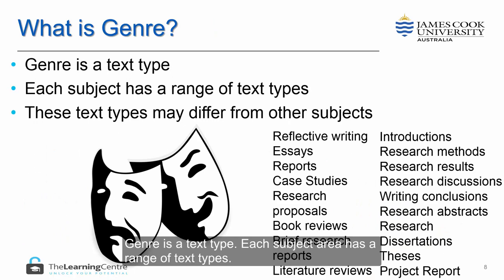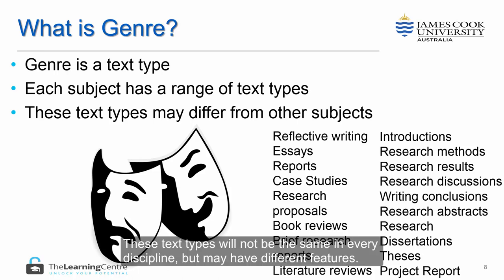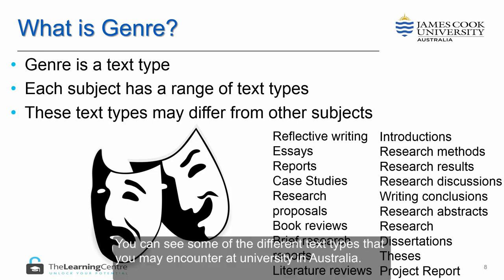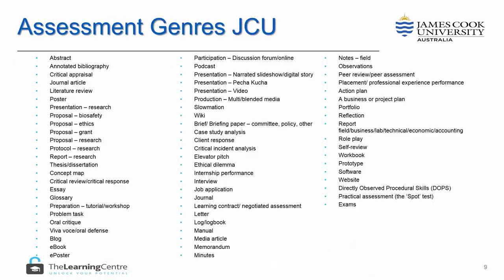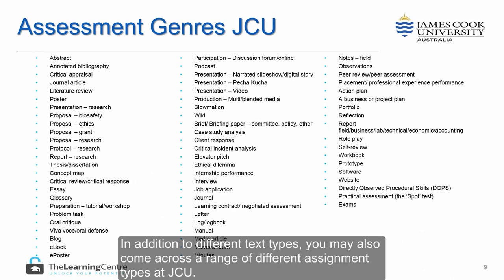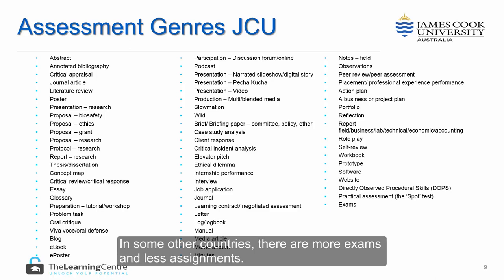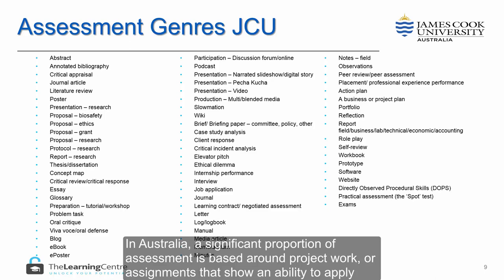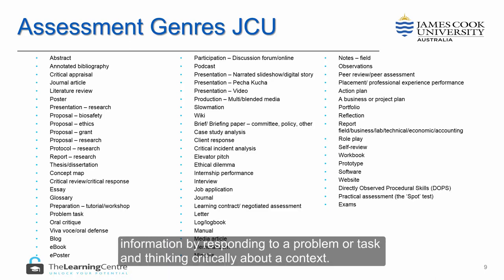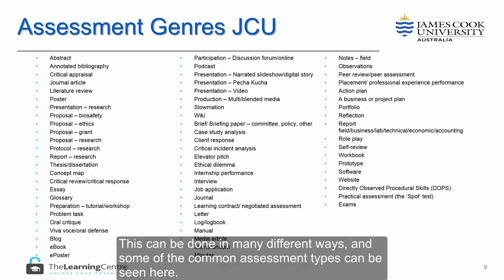Genre is a text type. Each subject area has a range of text types, and these types will not be the same in every discipline but may have different features. You can see some of the different text types that you may encounter at university in Australia here. In addition to different text types, you may also come across a range of different assignment types at JCU. In some other countries, there are more exams and less assignments. In Australia, a significant proportion of assessment is based around project work or assignments that show an ability to apply information by responding to a problem or task and thinking critically about a context. This can be done in many different ways, and some of the common assessment types can be seen here.